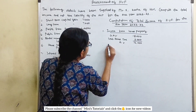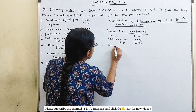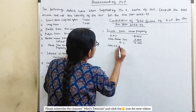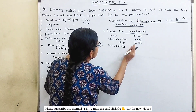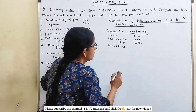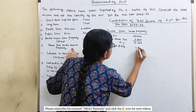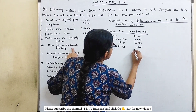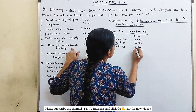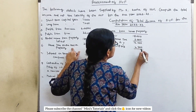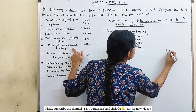Less standard deduction at the rate of 30% on the annual value. That is 4,800. The net income from house property is 11,200.